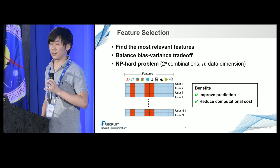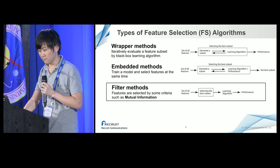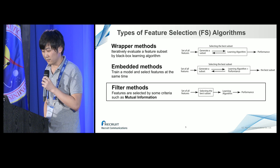In this way, feature selection improves prediction ability. Feature selection is NP-hard, which means it has 2^N combinations. There are three types of feature selection: wrapper methods, embedded methods, and filter methods.